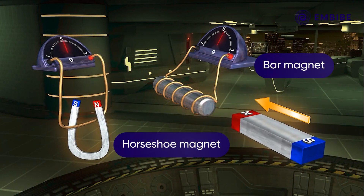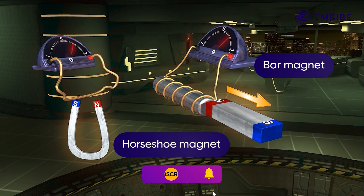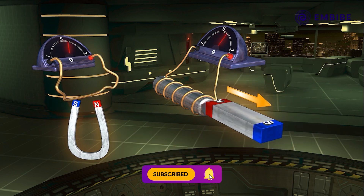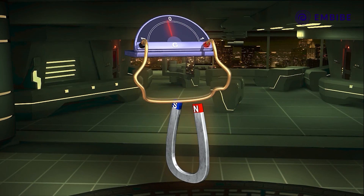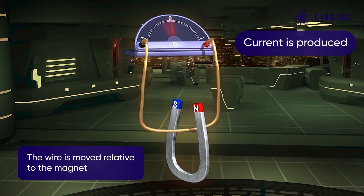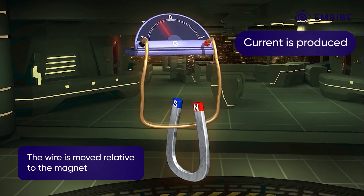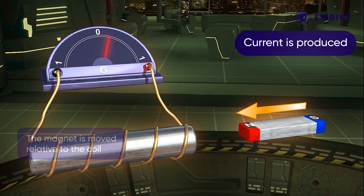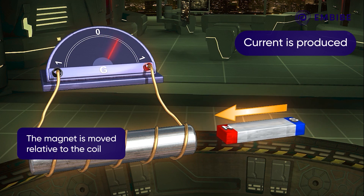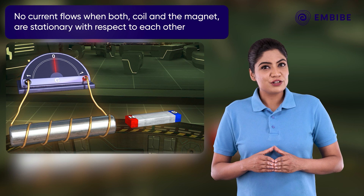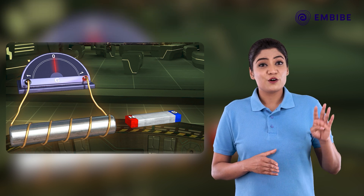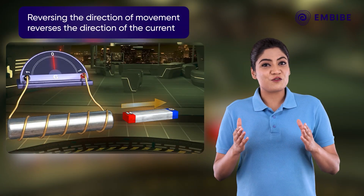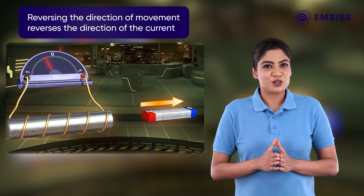Hence, we have seen that electric current can be produced in a coil by simply moving a magnet in and out of it. From many such experiments, Faraday gave the following conclusions for electromagnetic induction: 1. The current is produced when the wire is moved relative to the magnet. 2. The current is produced when the magnet is moved relative to the coil. 3. No current flows when both the coil and the magnet are stationary with respect to each other. 4. Reversing the direction of movement reverses the direction of the current.